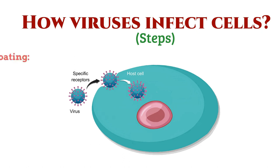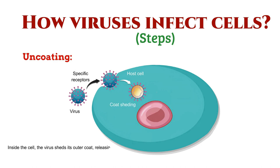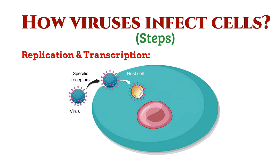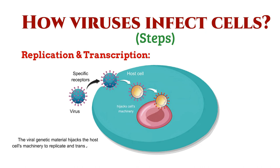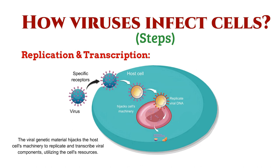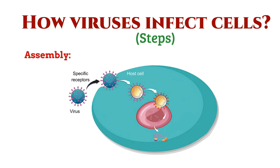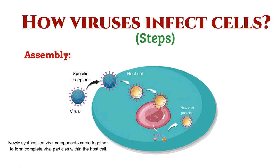Then comes uncoating: the virus sheds its outer coat inside the cell, releasing its genetic material into the cytoplasm. The next step is replication and transcription: the viral genetic material hijacks the host cell's machinery to replicate and transcribe viral components, utilizing the cell's resources. Following that is assembly: newly synthesized viral components come together to form complete viral particles within the host cell.